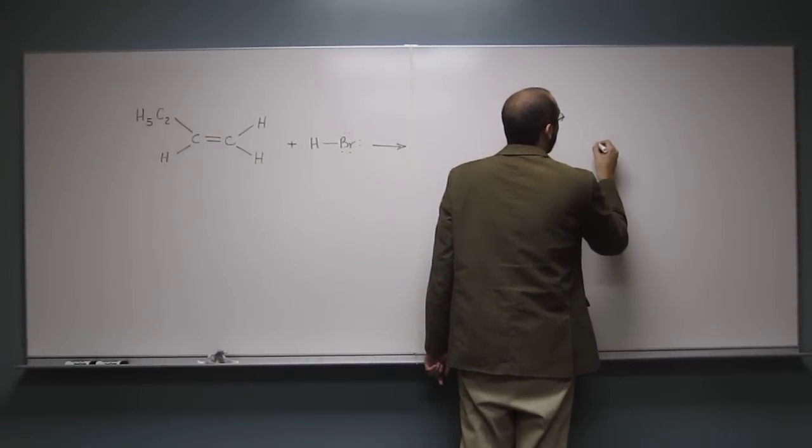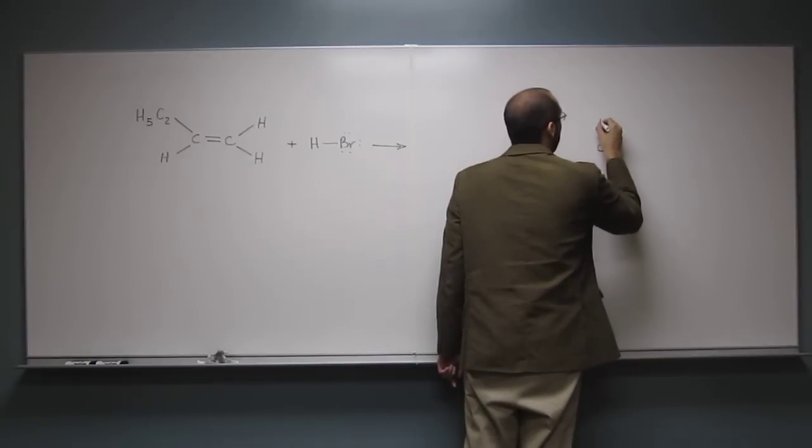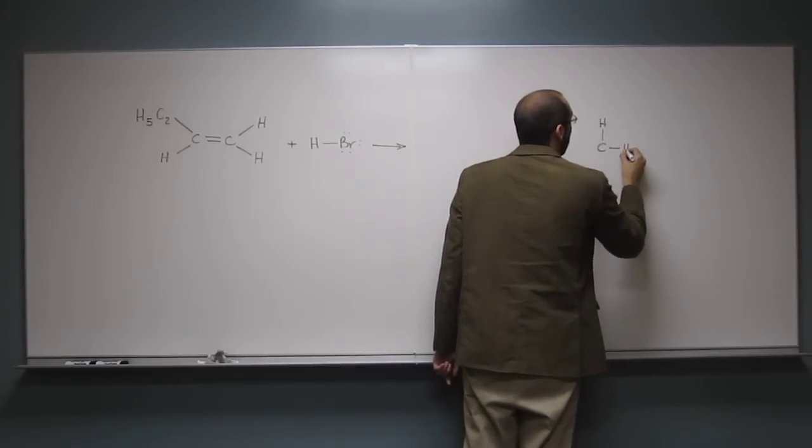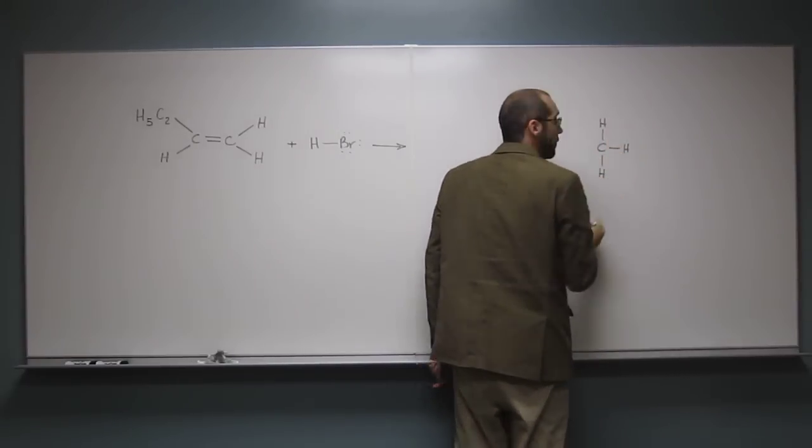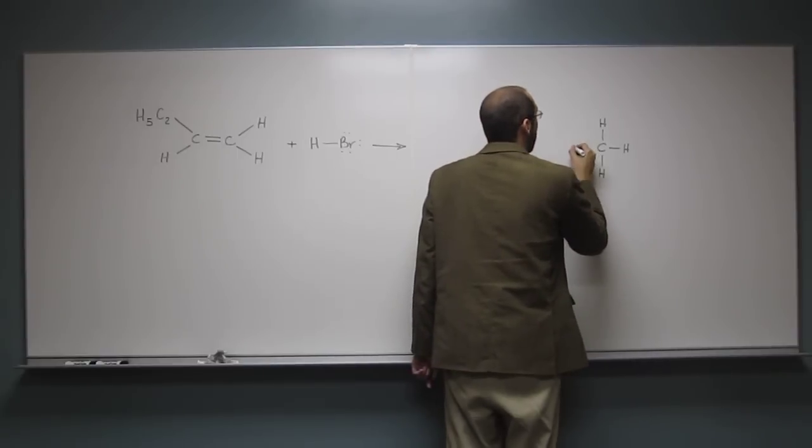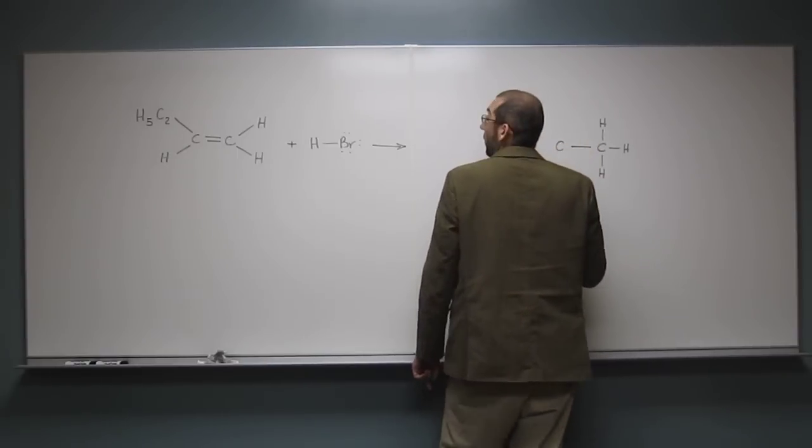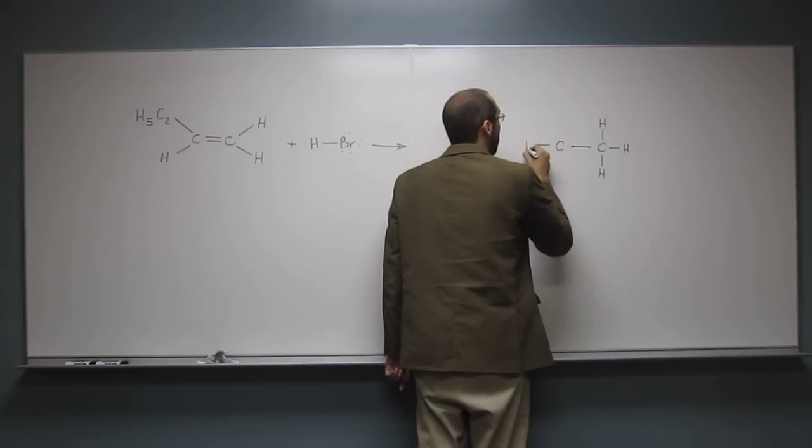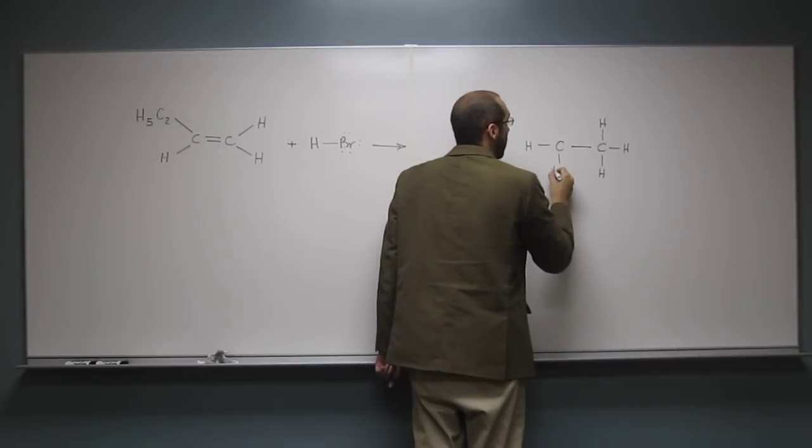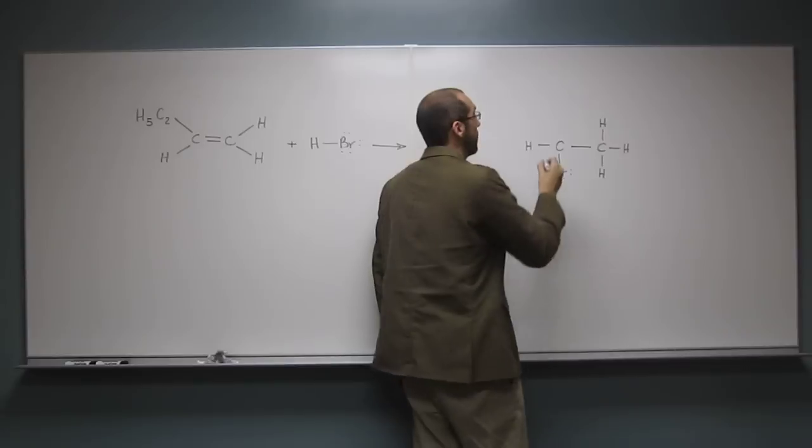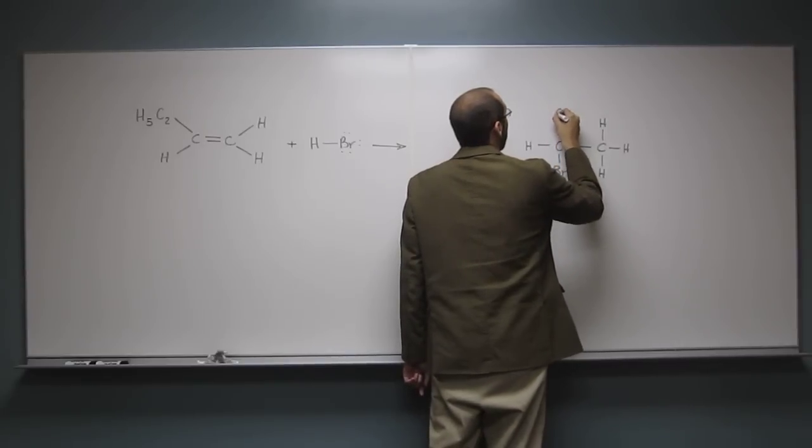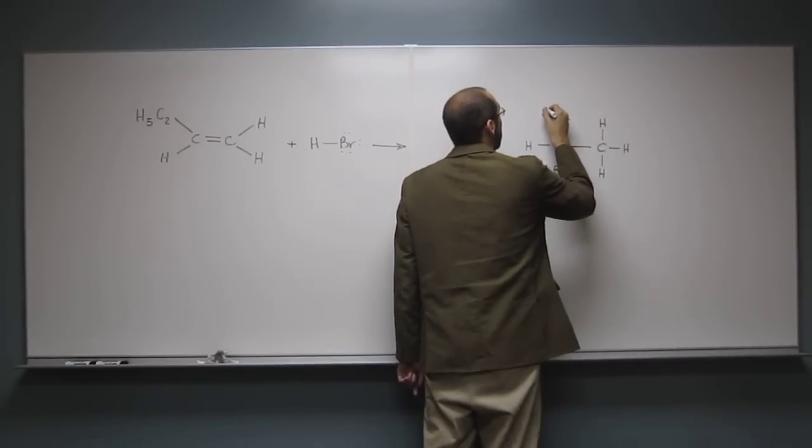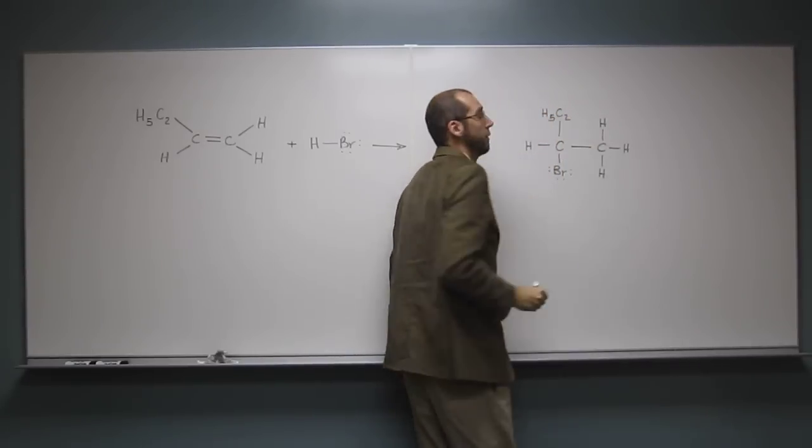Now, so this carbon, the last carbon is now going to be CH3, like that. Then that's going to be attached to CHBr, like that. And then, up here, we have C2H5.